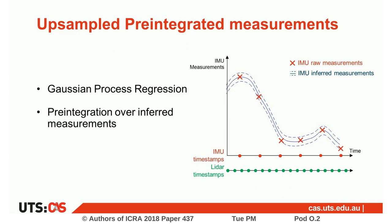We use Gaussian process regression to interpolate the raw IMU readings at any time of interest. These measurements can be used to easily work with asynchronous sensors without making assumptions on the motion of the system.